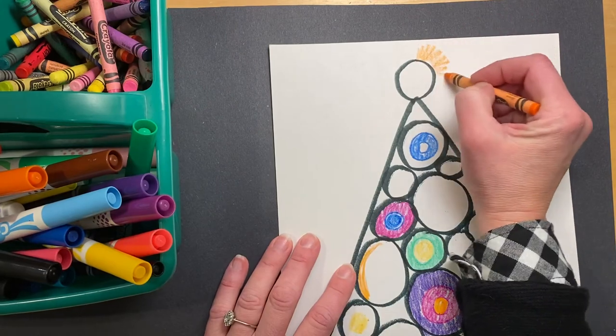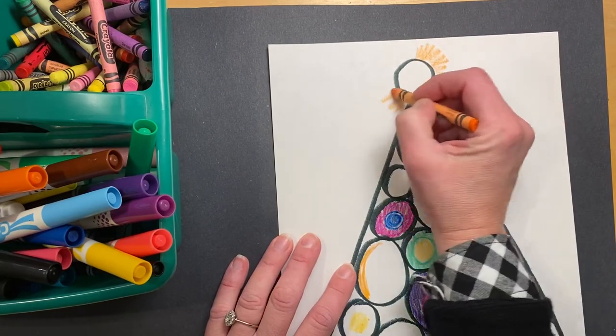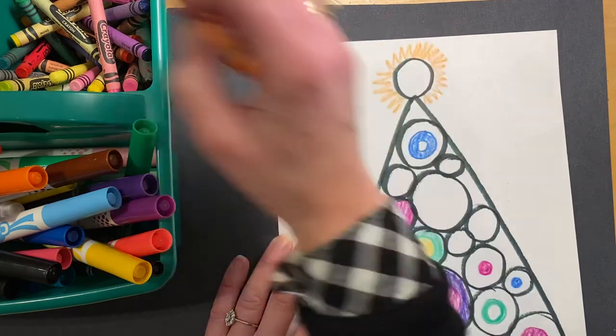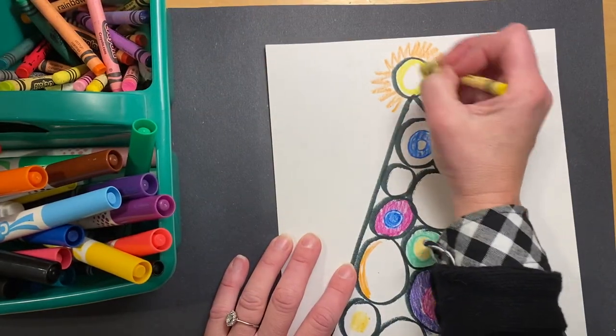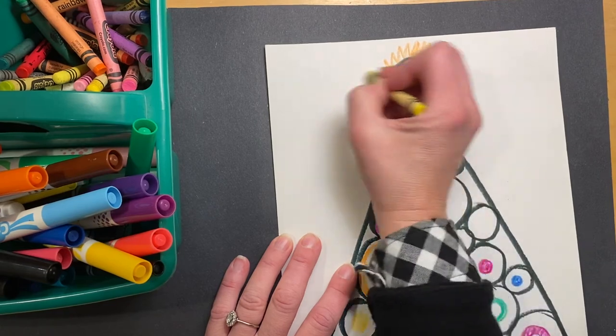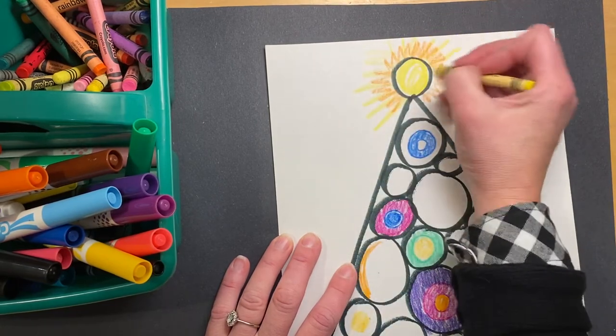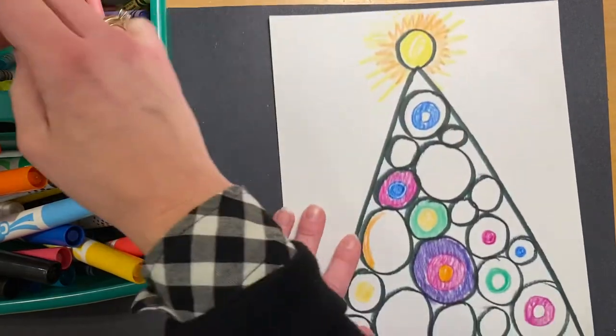Let's color a little bit of the star at the top of this beautiful Kandinsky tree. And I'm going to color the center. Oh, my. Shining bright. There it is.